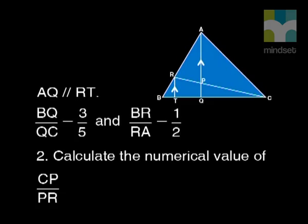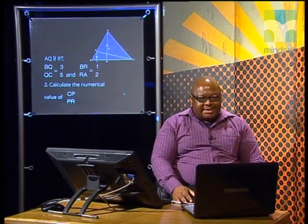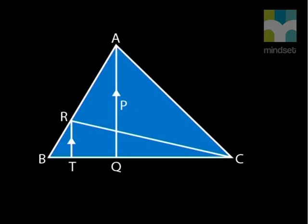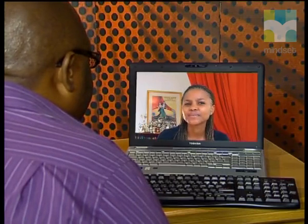Calculate the numerical value of CP divided by PR. Identify the triangle that has CP and PR as one side. Are you going to use triangle BRC or triangle RTC? Be careful. The proportion theorem can be used on triangle RTC, but it cannot be used on triangle BRC. Do you know why not? We don't have a line parallel to one of the sides. Yes. So, in triangle CTR, we know that CP divided by PR is equal to CQ divided by QT.